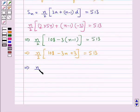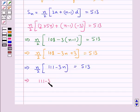Which further gives us n/2 times [111 - 3n] equals 513. This gives us (111 - 3n) times n equals 1026.